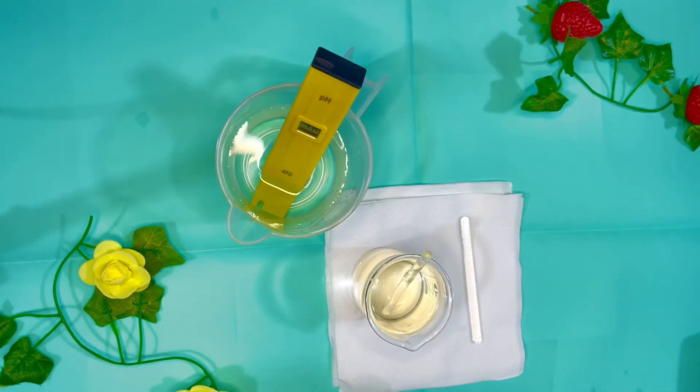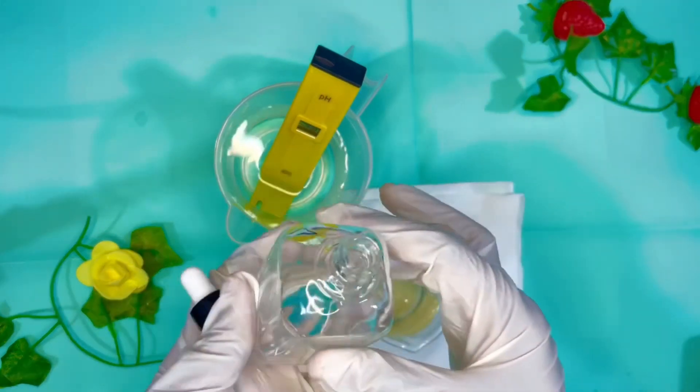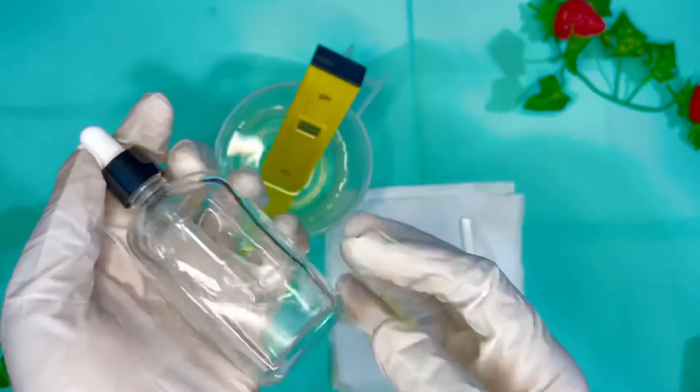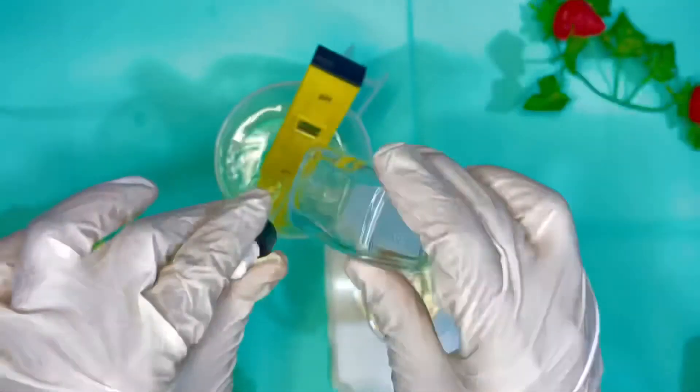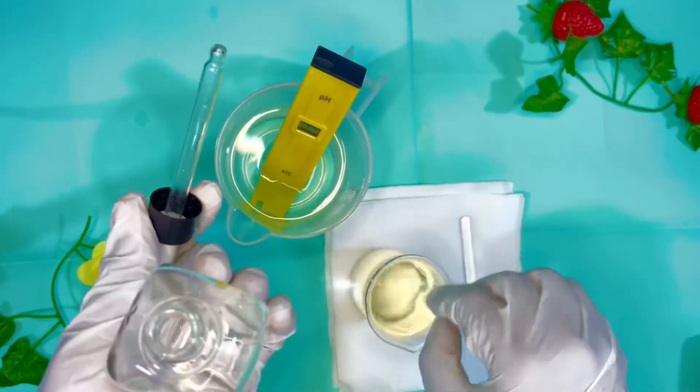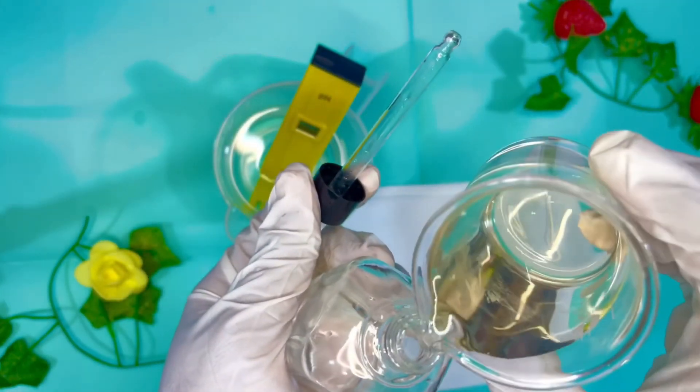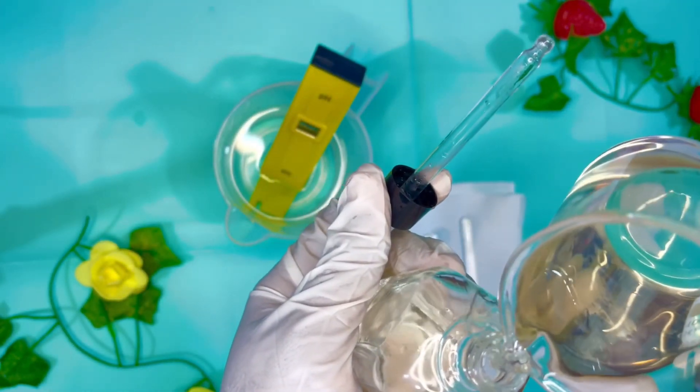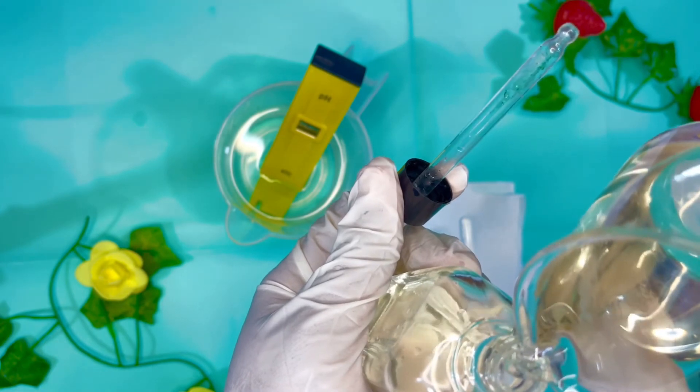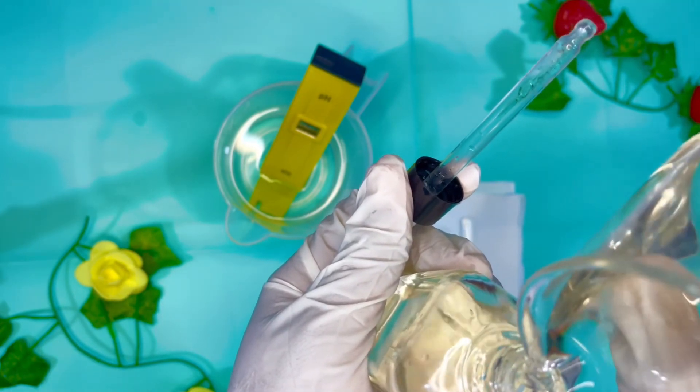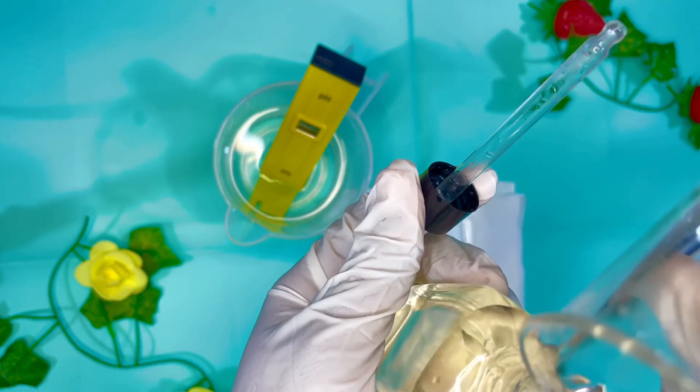So we are done with our 3% glycolic acid face toner. And in here I have my 100 grams bottle, my dropper bottle here. And I got this bottle from AliExpress, you can check that out. It is 100 grams size. So I'm gonna get my product in there, and then we are done for today's recipe.